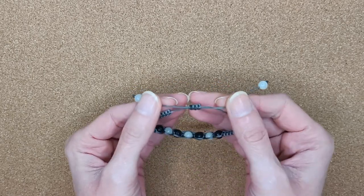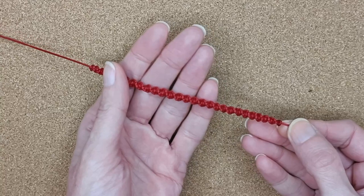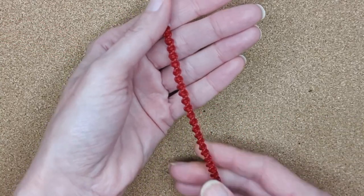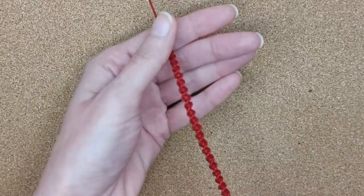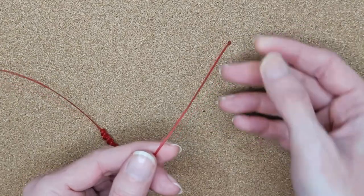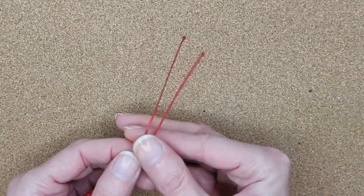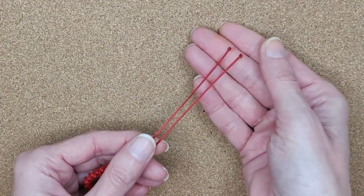I use 1 mm waxed polyester cord, but you can use the cord that you prefer. I have created a spiral bracelet and measured the length of the cords I want to leave hanging so that my bracelet is adjustable.